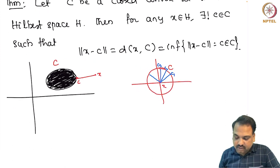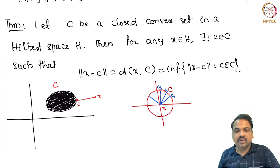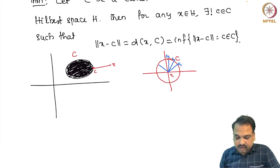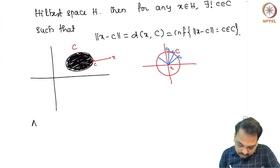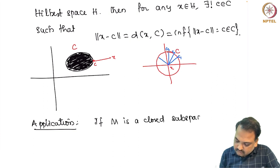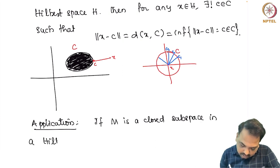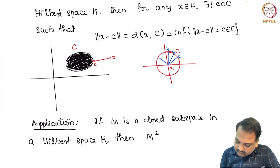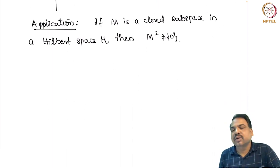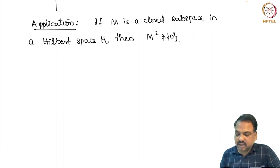The key idea is to use the parallelogram law directly to prove the nearest point theorem; we can skip the detailed proof. Now, as an application, we can show that if M is a closed subspace of a Hilbert space H, then the orthogonal complement of M is non-zero. Since any subspace is convex, a closed subspace is a closed convex set, and we apply the nearest point theorem to get this result.